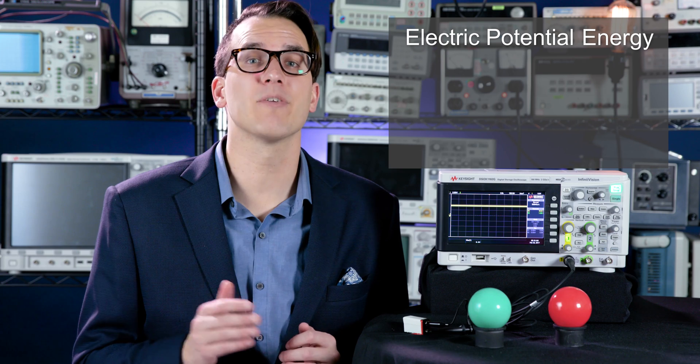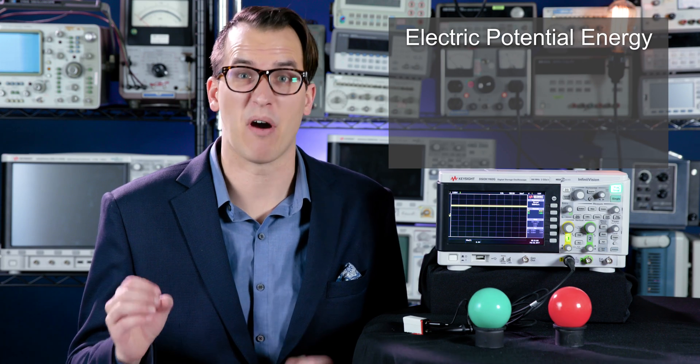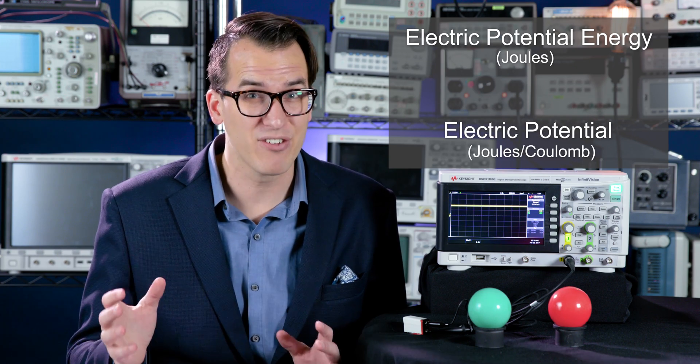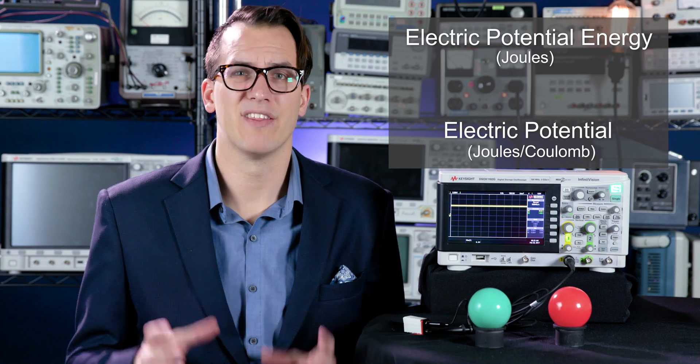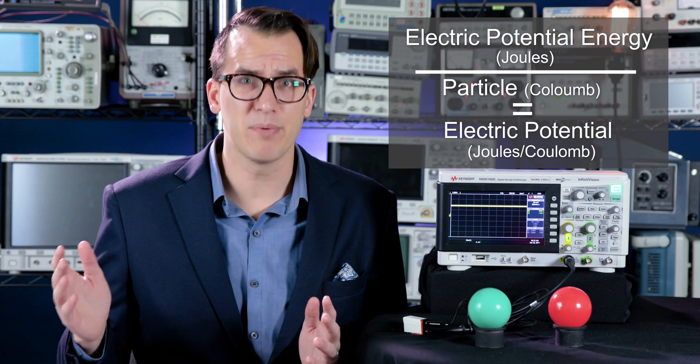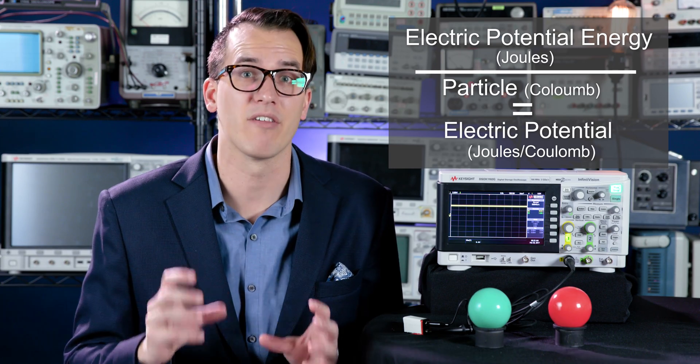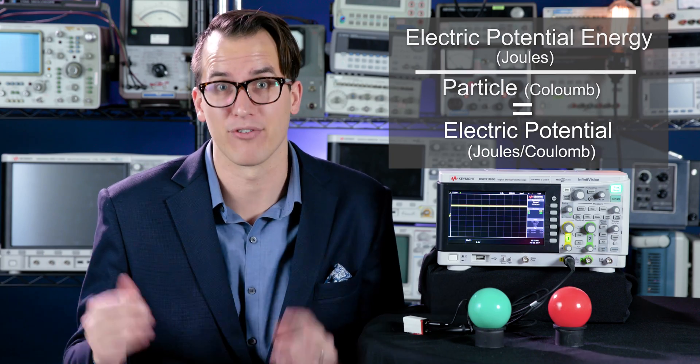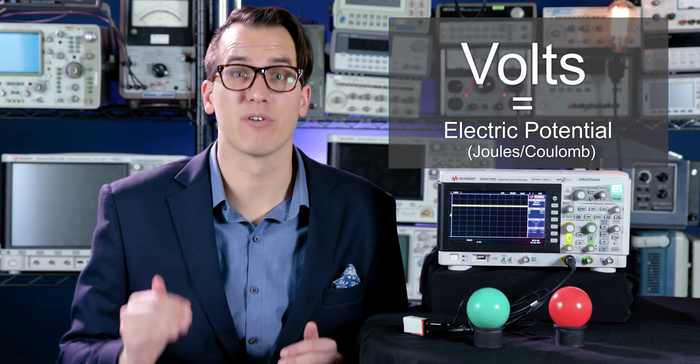A quick clarification: electric potential energy has to do with particles themselves, like electrons and ions. It's measured in joules, whereas electrical potential is measured in joules per coulomb, and it has to do with the electric field itself. The charge of the particles themselves is measured in coulombs. So if you take the electrical potential energy and divide it by the charge of the particle itself, all you're left with is that energy in space, the electrical potential. And volts are measured in joules per coulomb.